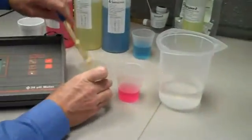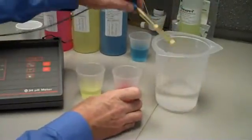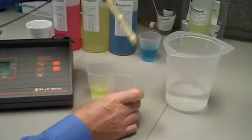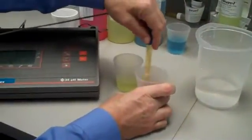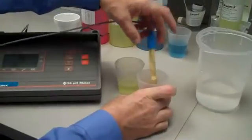We can remove the electrode from buffer 7, put it into rinse water, and then place the pH electrode into a buffer of 4, stirring vigorously for a few seconds.